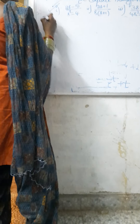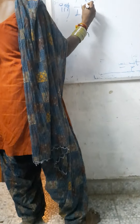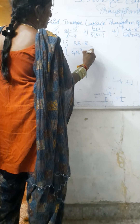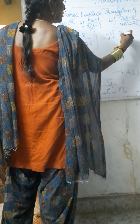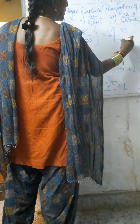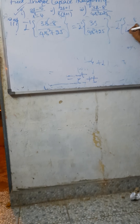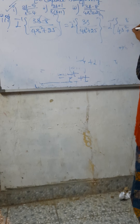Next, we have to find the third problem: inverse Laplace Transform of (3s minus 8) by (4s squared plus 25). This can be written as the inverse Laplace Transform of 3s by (4s squared plus 25) minus the inverse Laplace Transform of 8 by (4s squared plus 25).